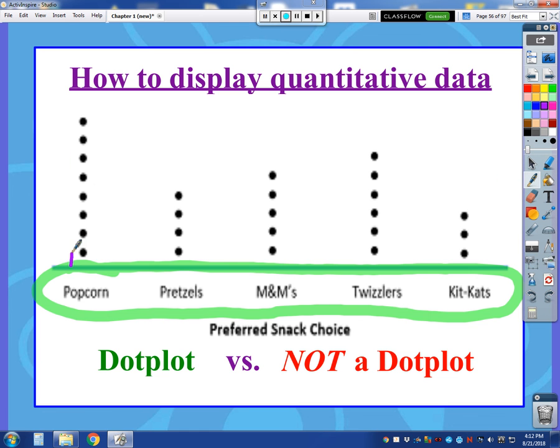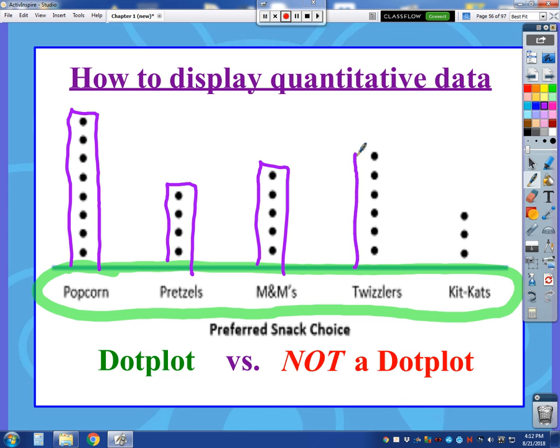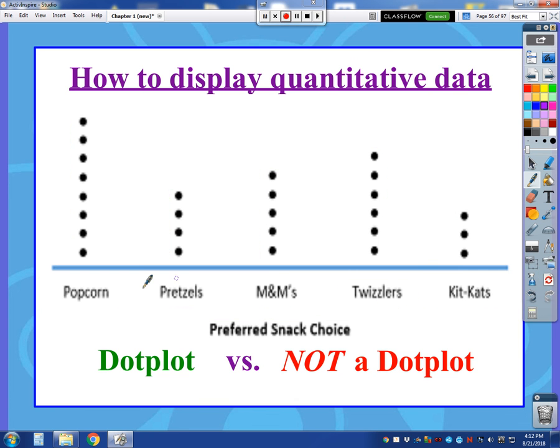So this cannot be displayed as a dot plot. This would be displayed as something we talked about earlier, a bar graph. That would be perfect for this. Or a pie chart, perhaps, if we wanted to represent things as percentages. So just because you see dots does not mean it is necessarily a dot plot. Make sure that your data being displayed here is quantitative and not categorical.